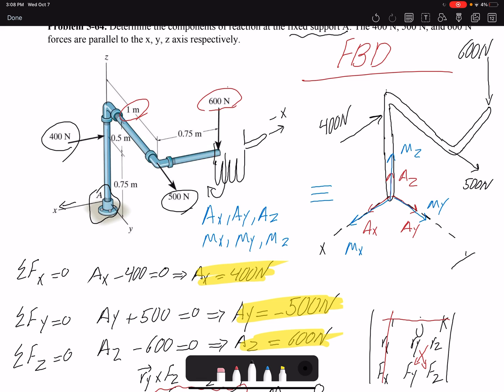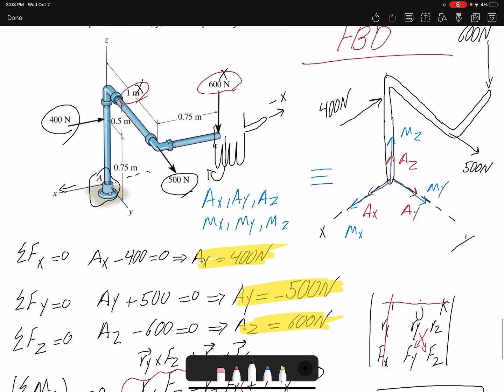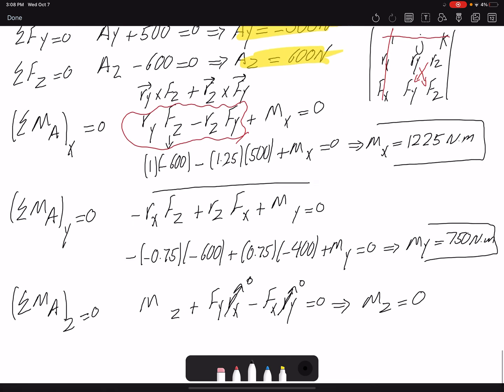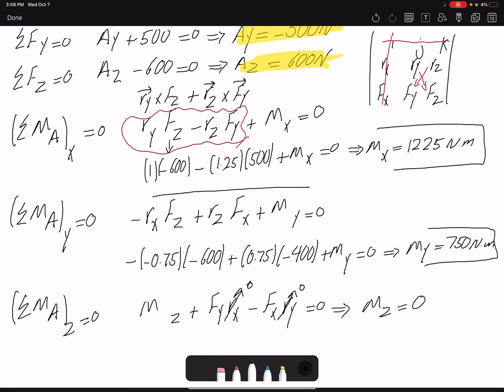So that means that this force is creating a moment about X axis in the negative direction. You have to use your right-hand rule. 600 multiplied by 1, the moment arm, gives the moment about X axis with negative sign. Or we could use vector or scalar formulation. But we found our six unknowns: the three forces and the three moments.